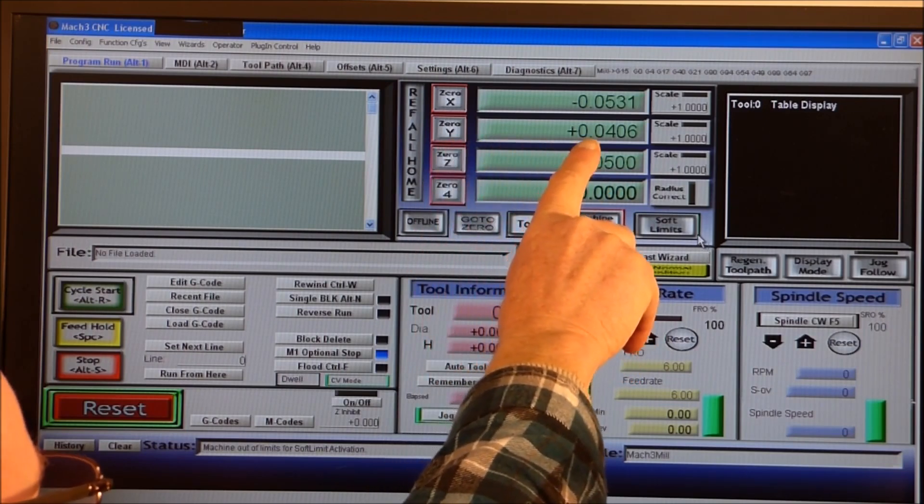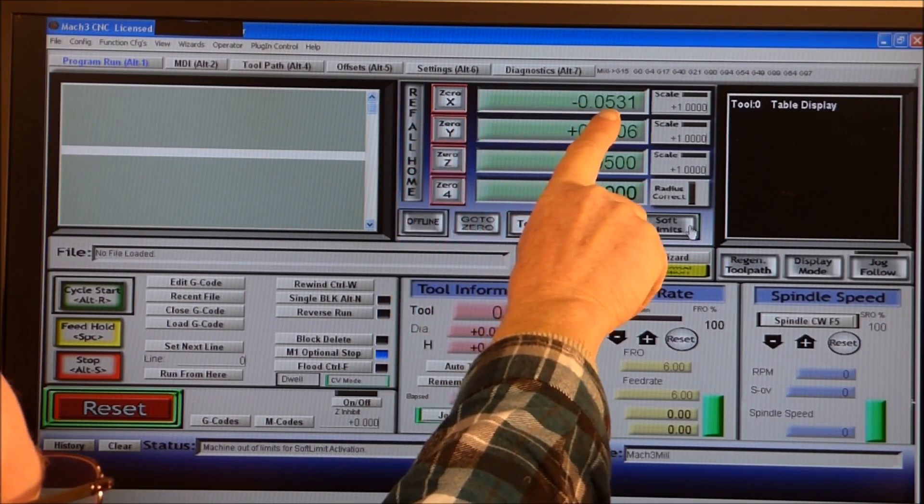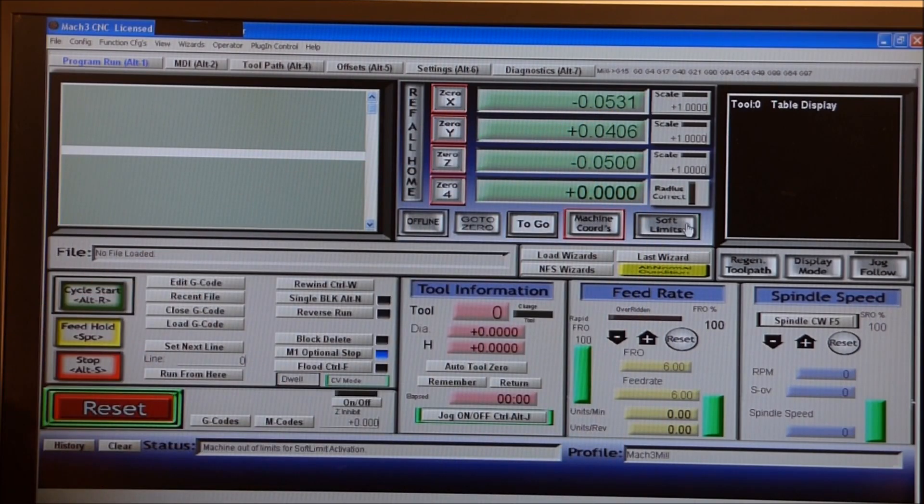I need to ensure that the Z is in a very slight minus reading, the Y is in a very slight plus reading, and the X is in a very slight minus reading as well because of the way the configuration of my axes. You can turn your soft limits on like that.